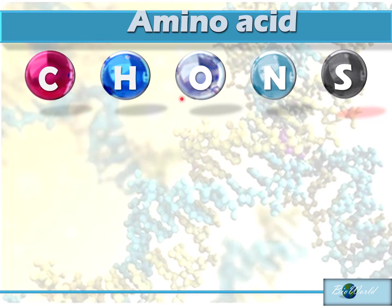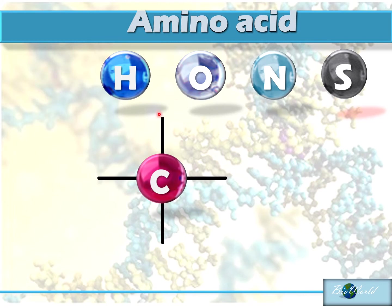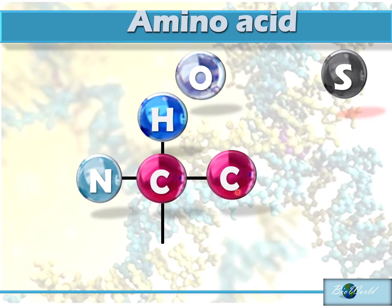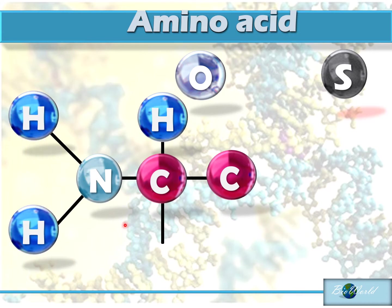Let's arrange these molecules to make an amino acid. We'll start with the center carbon. Carbon can make four bonds, so we see the bonds will attach to hydrogen, nitrogen and another carbon. Nitrogen can make three bonds — one bond is already attached to carbon, leaving two free bonds which will attach to hydrogen.